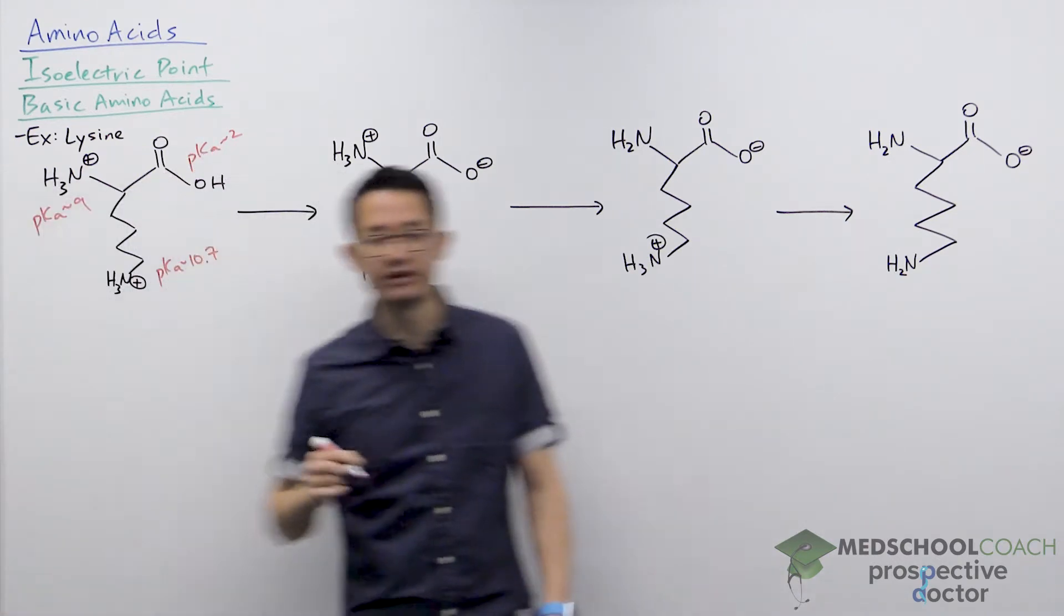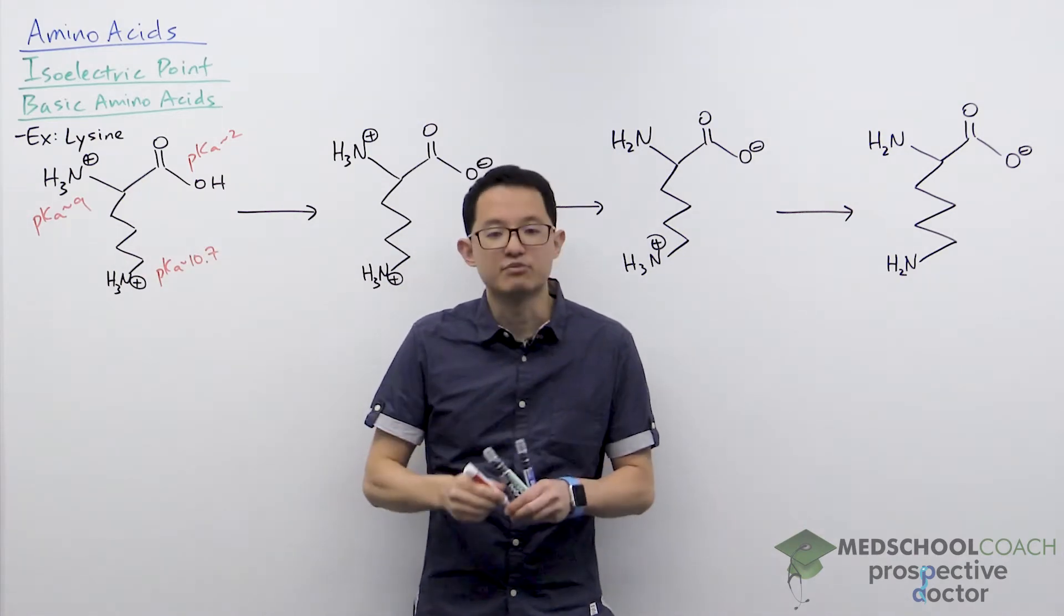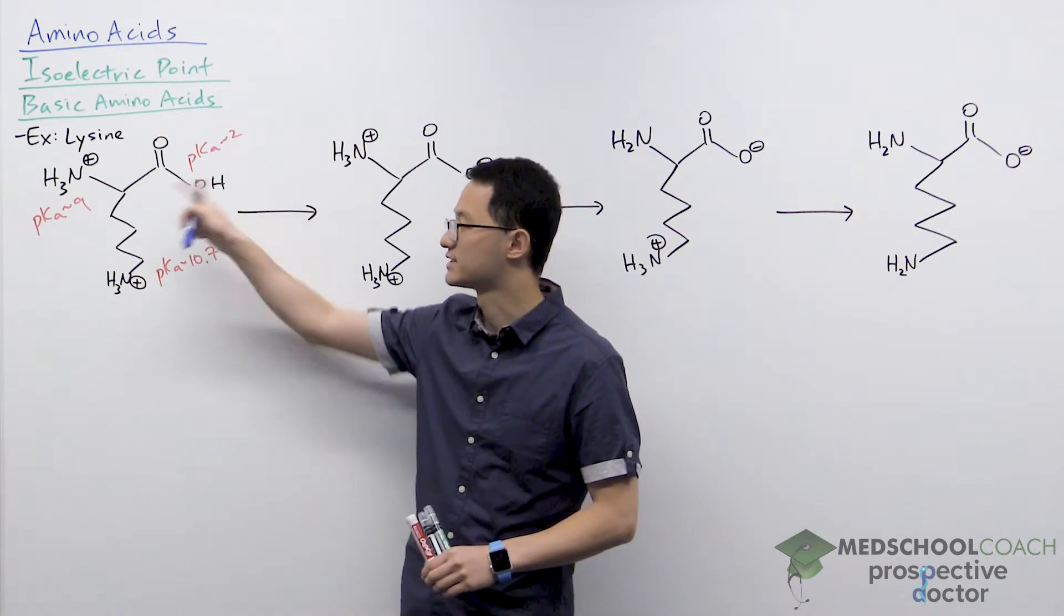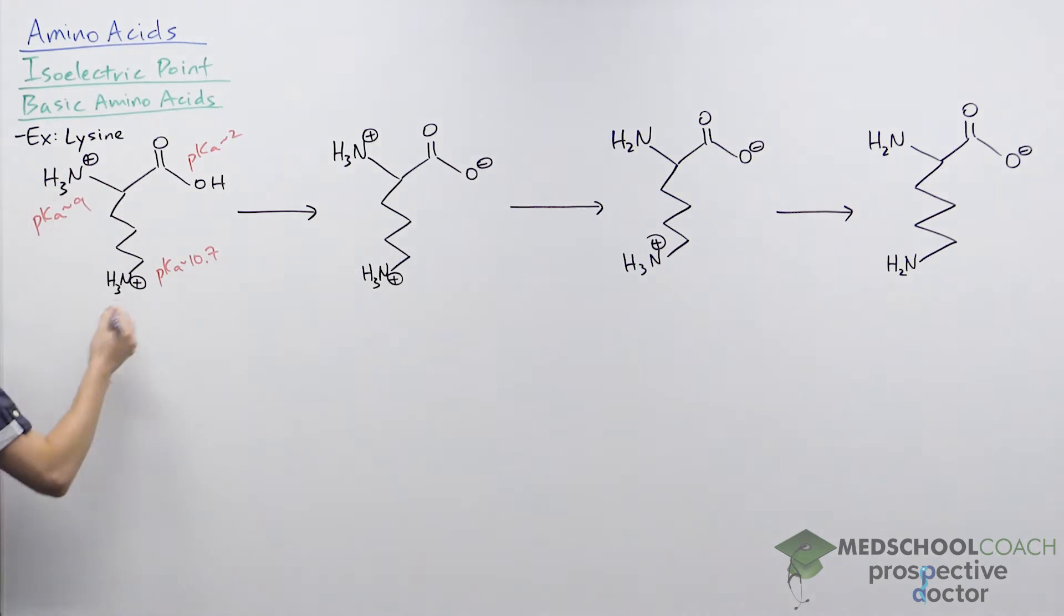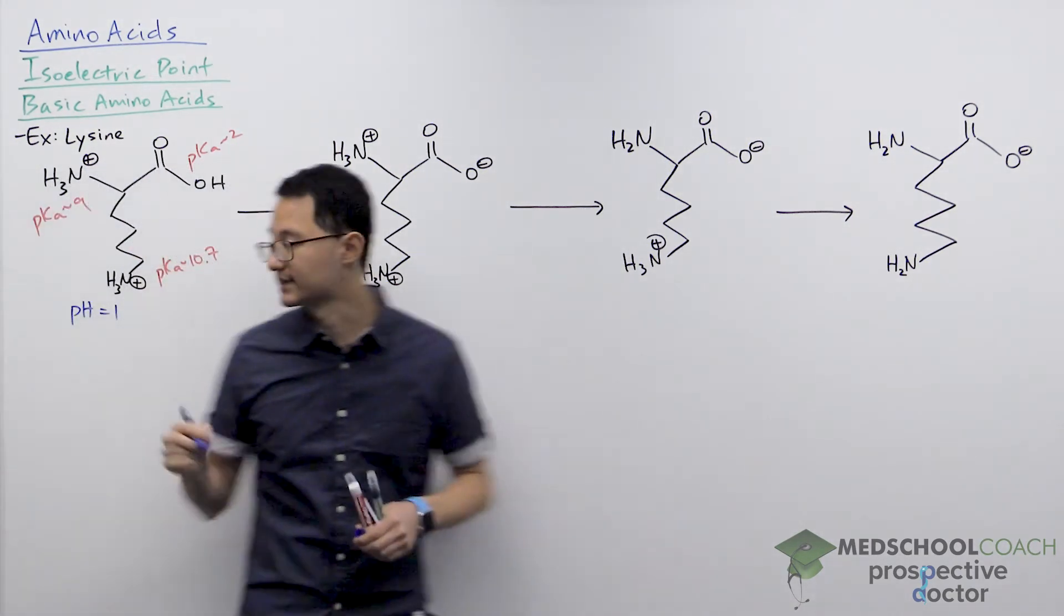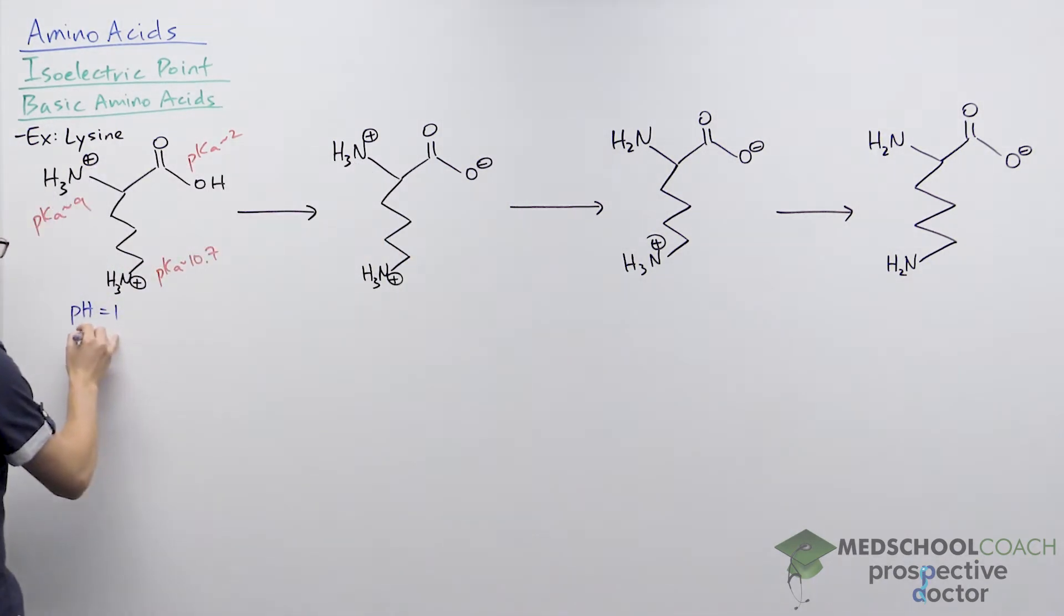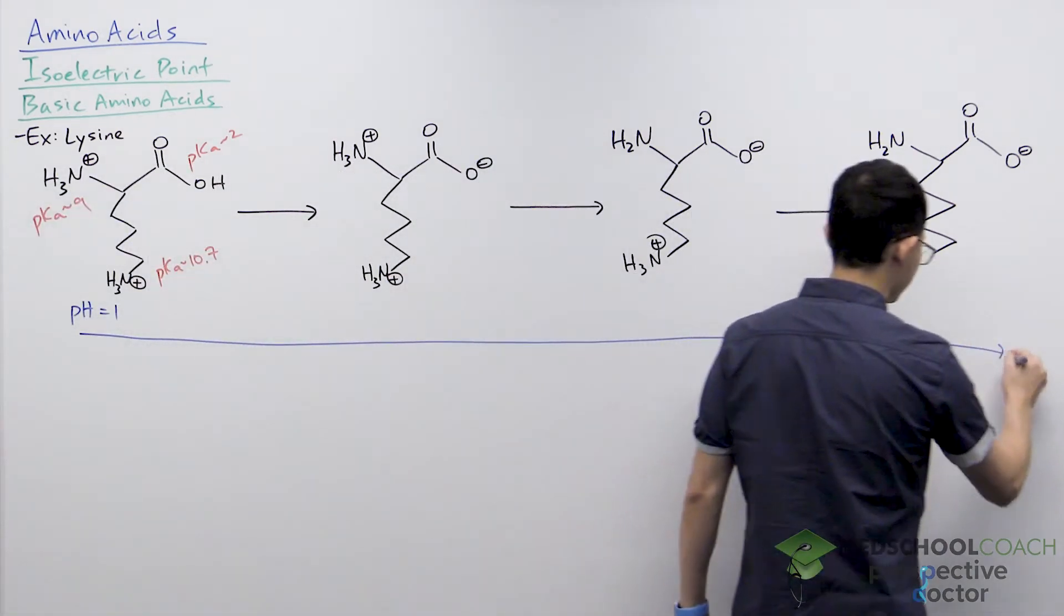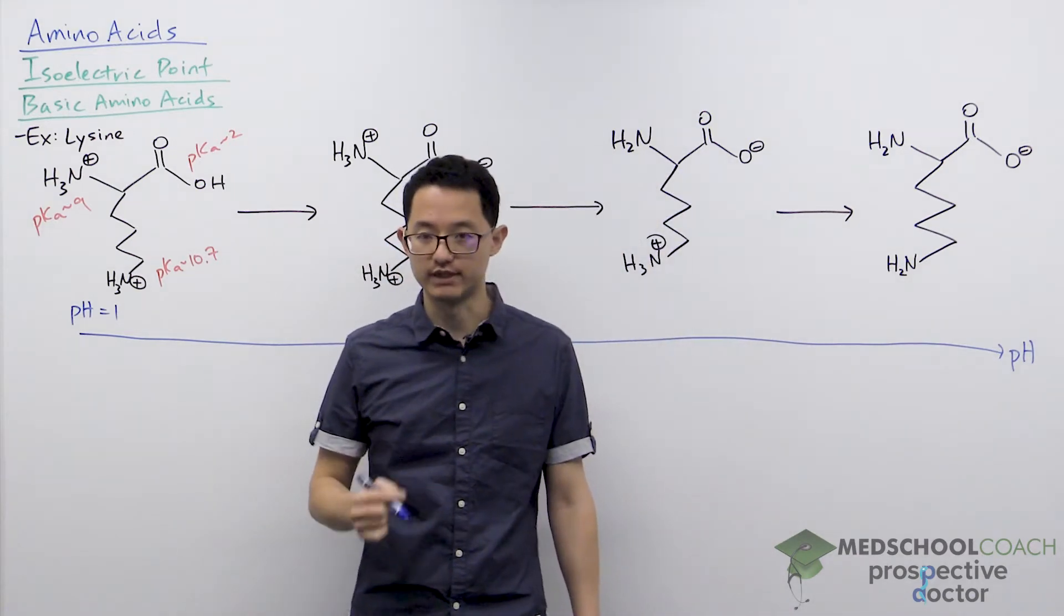As we discussed in the previous video, if all three of these groups are protonated as shown, that means we must be at a very low pH value, one that is lower than all three of these pKa values. We could, for instance, be at a pH of 1, because 1 is less than all these different pKa values. Same as before, we're going to start at a pH of 1 and gradually increase the pH until all of our acidic functional groups have been deprotonated.